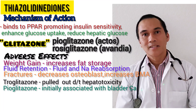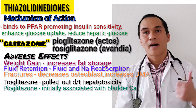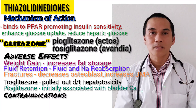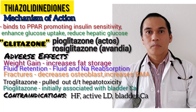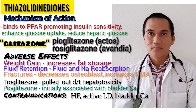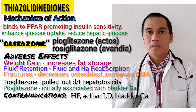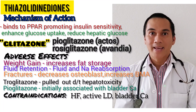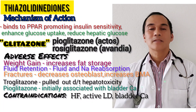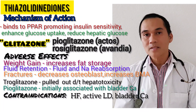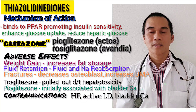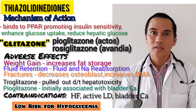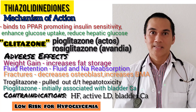Contraindications for thiazolidinediones include heart failure because the drug can cause fluid retention. It is also contraindicated in patients with active liver disease and those with active or a history of bladder cancer. Because this medication does not stimulate insulin release, there is a low risk of hypoglycemia unless combined with insulin, sulfonylureas, or meglitinides.